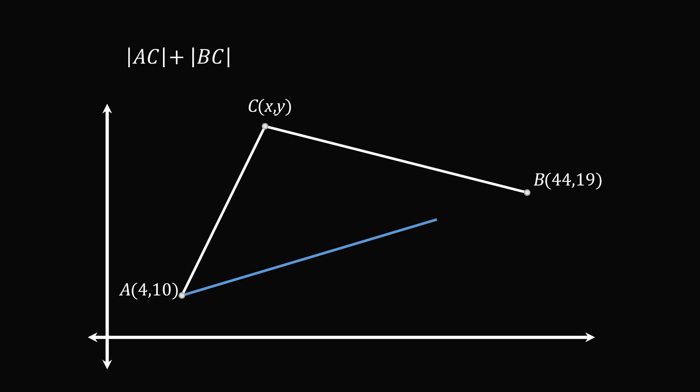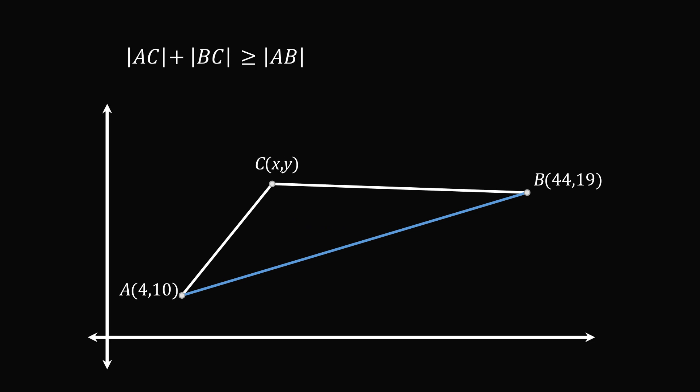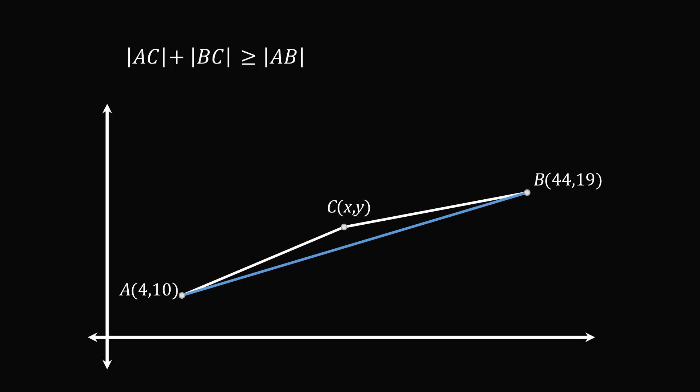Let's now construct AB. By the triangle inequality, the length of AC plus the length of BC is greater than or equal to the length of AB, and equality holds exactly when C is along the line segment AB. This will be the minimum sum. So we just need to calculate the length of AB.